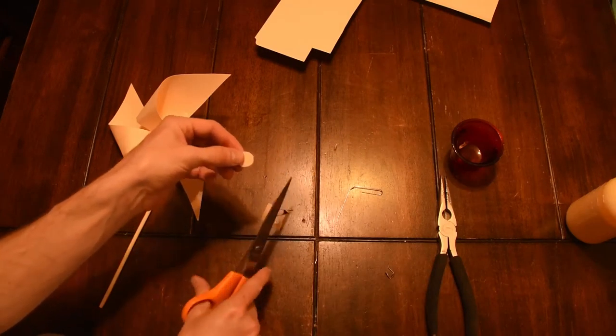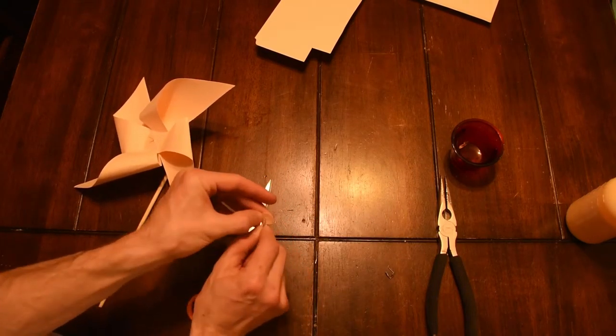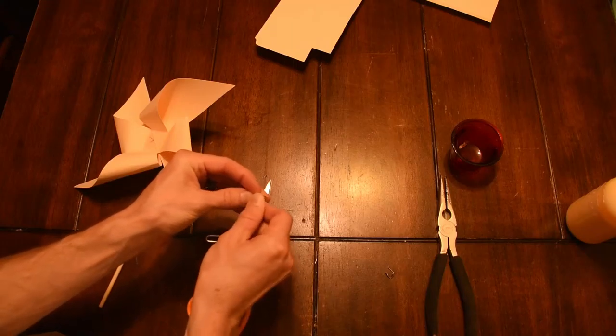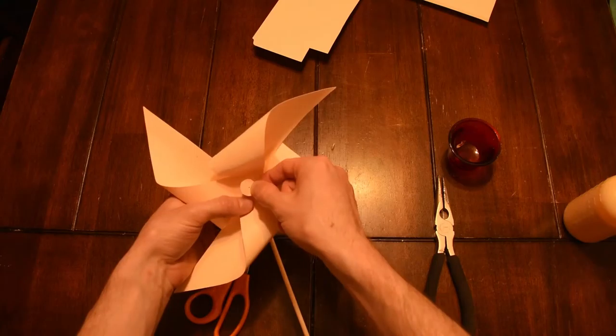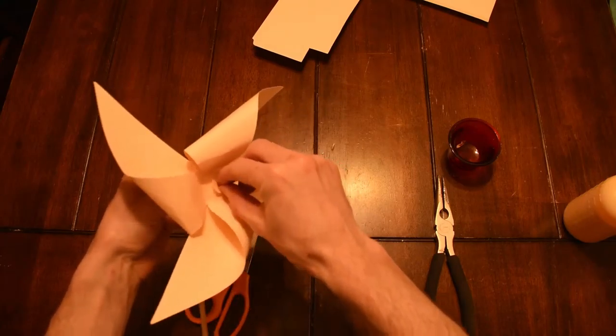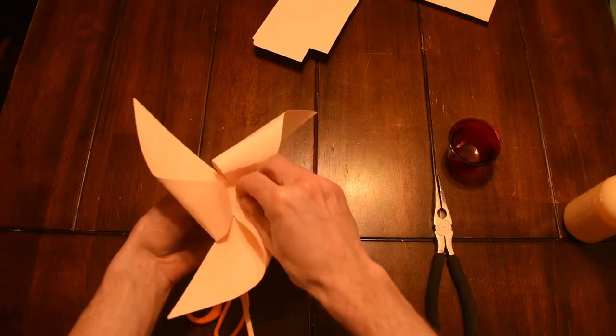Now the one other thing you might want to do is create a little washer that goes just behind your spring clip. Otherwise your spring clip might catch on the seams of the pinwheel as it spins. So we're going to make a little washer, simply cut a circle out of your same cardstock or manila folder, punch a hole in the center, and put it in front of the pinwheel before you put your spring clip on.